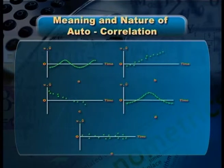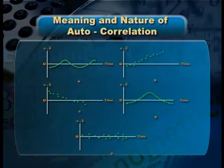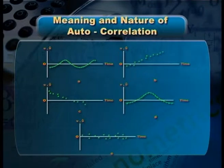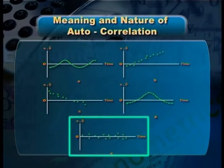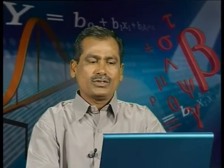We can analyze the nature of the problem of autocorrelation with the help of figures. We have five figures from A to E. Figure A deals with the cyclical pattern. Figures B and C show an upward trend and downward trend. In the case of figure D, we can see the linear and quadratic trend. In figure E, there is no problem of autocorrelation — it satisfies the assumption E(ui, uj) = 0.